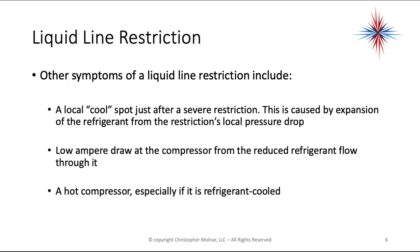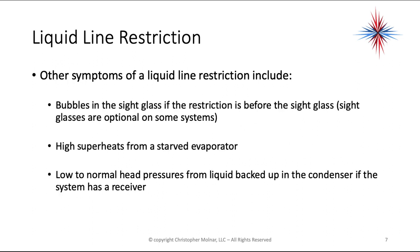Other symptoms of liquid line restrictions include a local cool spot just after the severe restriction, caused by expansion of refrigerant from the pressure drop. Low amp draw at the compressor from reduced refrigerant flow through it. A hot compressor — especially since most compressors are refrigerant-cooled. Bubbles in the sight glass if the restriction is before the sight glass. High superheats from a starved evaporator. Low to normal head pressures from liquid backed up in the condenser if the system has a receiver.